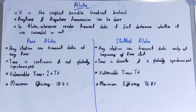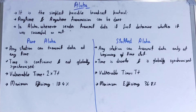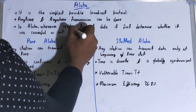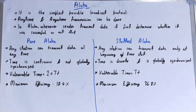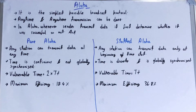In ALOHA, whenever a sender transmits data, it first determines whether the transmission was successful or not. The sender transmits a frame and waits for an acknowledgement from the receiver to confirm whether the particular frame was received. If after a particular time the sender doesn't get an acknowledgement, then the sender will retransmit that packet.